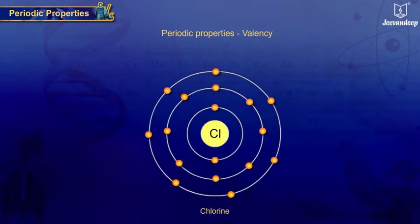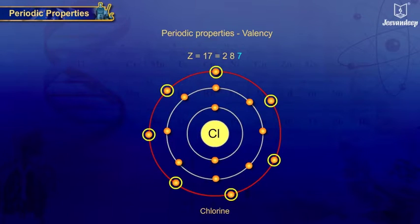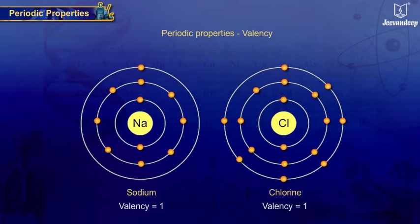A chlorine atom with atomic number 17 has two electrons in the first shell, eight electrons in the second shell, and seven electrons in the outermost valence shell. Thus, the number of valence electrons is seven.